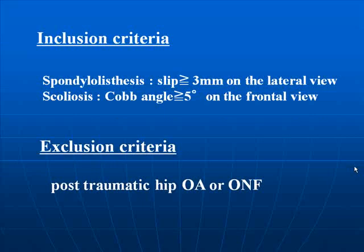Spondylolisthesis was judged to be present when a slip of more than 3 mm was noted on the lateral radiograph view. To exclude non-structural scoliosis, scoliosis was judged to be present when the curve angle exceeded 5 degrees on the frontal view lumbar radiograph obtained in the supine position.